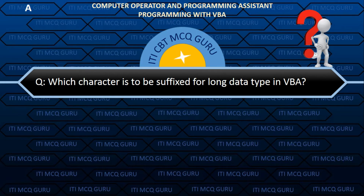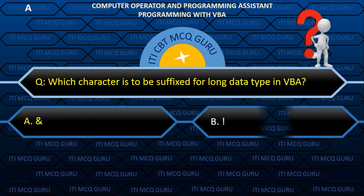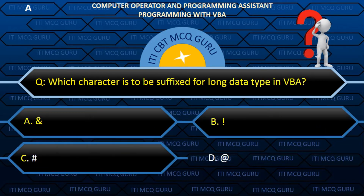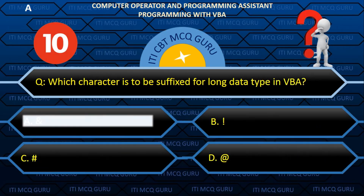Which character is to be suffixed for the long data type in VBA? Answer: A. & (ampersand).